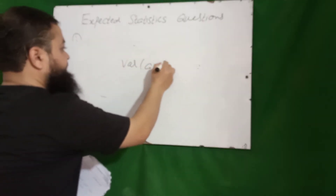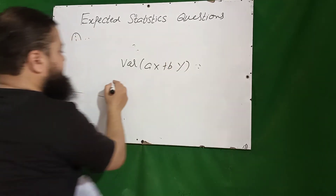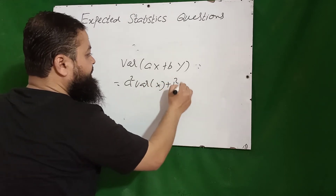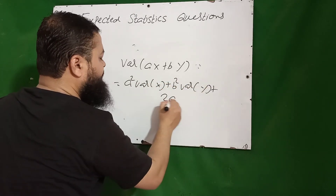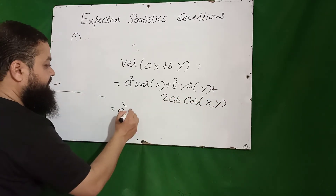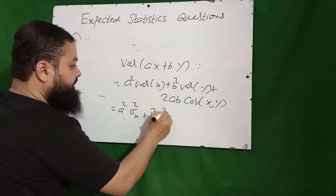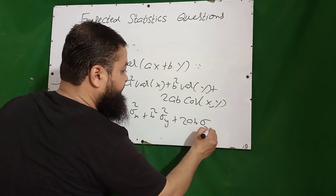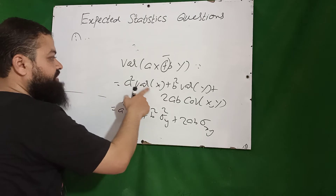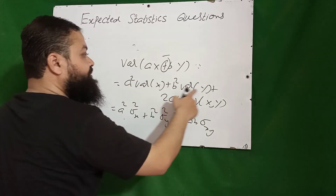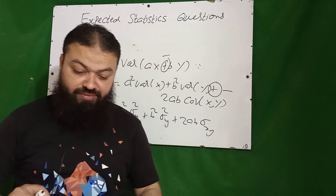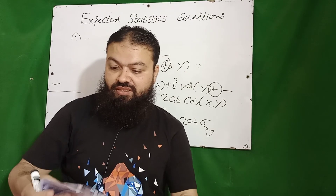The variance of (aX + bY), when X and Y are not independent, equals a² Var(X) + b² Var(Y) + 2ab Cov(X,Y), or written as a²σ²_x + b²σ²_y + 2ab σ_xy. If you have a minus sign — variance of (aX − bY) — then it becomes a²Var(X) + b²Var(Y) − 2ab Cov(X,Y). A very important one.